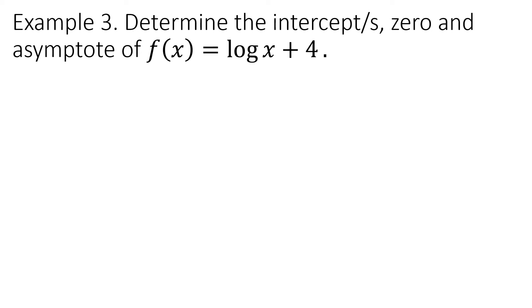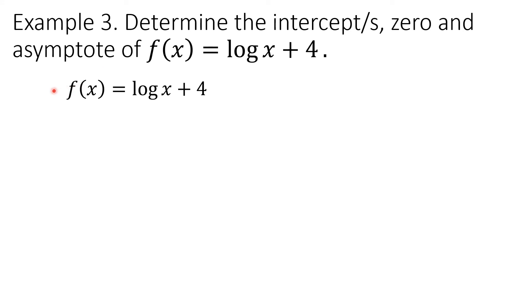Example 3: Determine the intercepts, zero, and asymptote of f(x) = log(x) + 4. The value of a is 1, the value of b is 10 — since no base is written, it is a common logarithm with base 10. The value of c is 0 because this is a monomial, and d equals 4. To find the x-intercept, we substitute 0 to y: 0 = log(x) + 4.